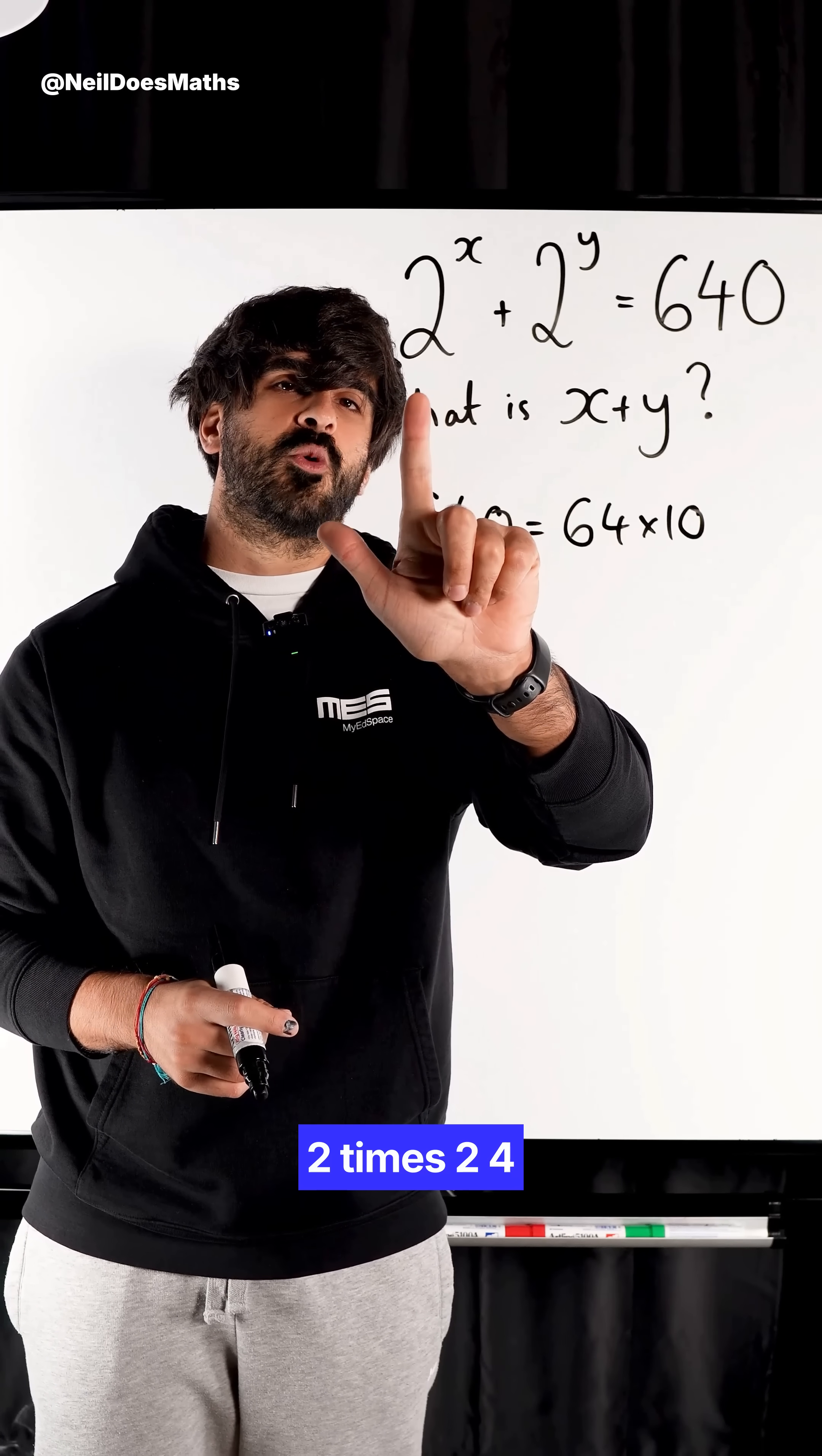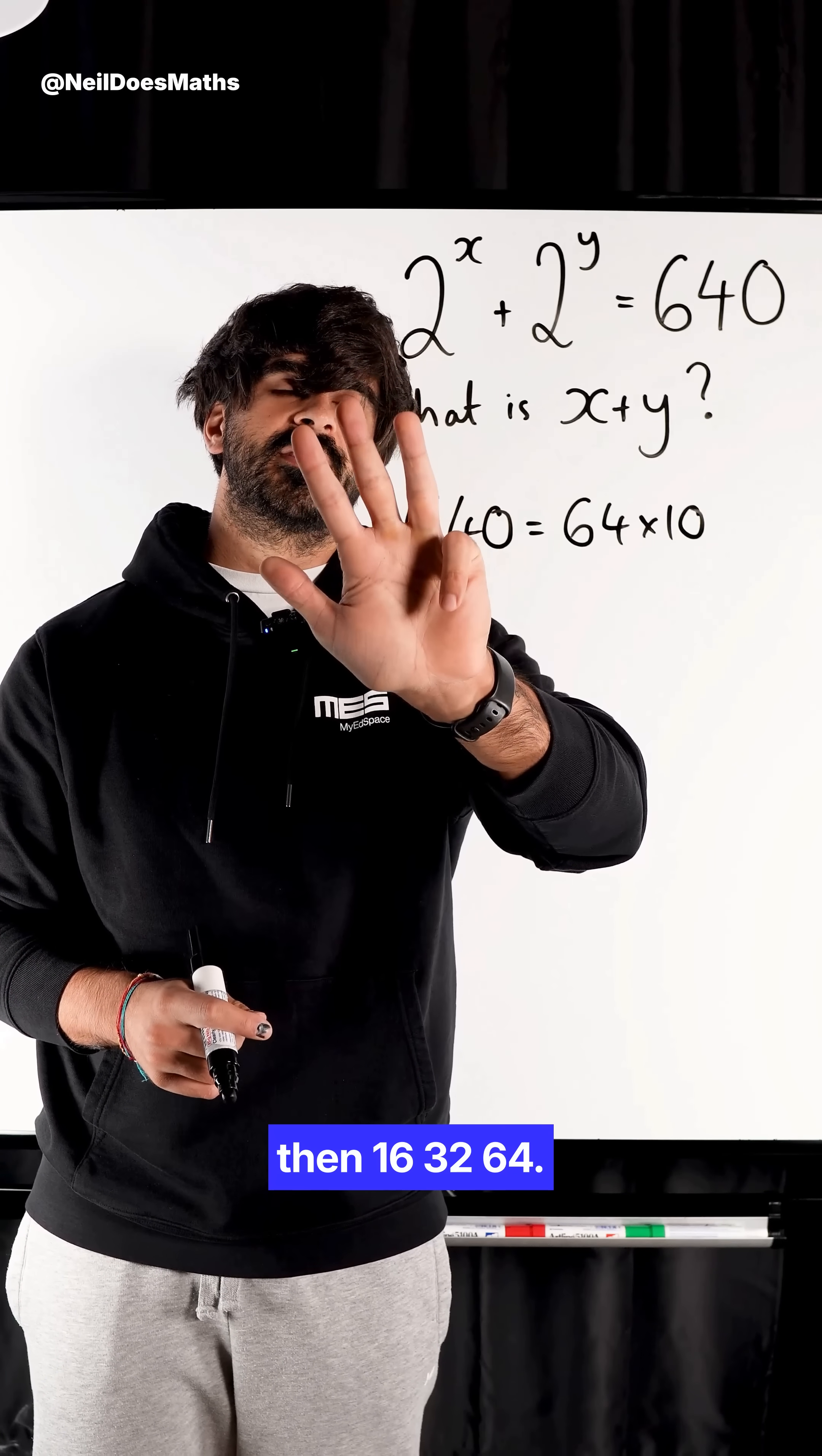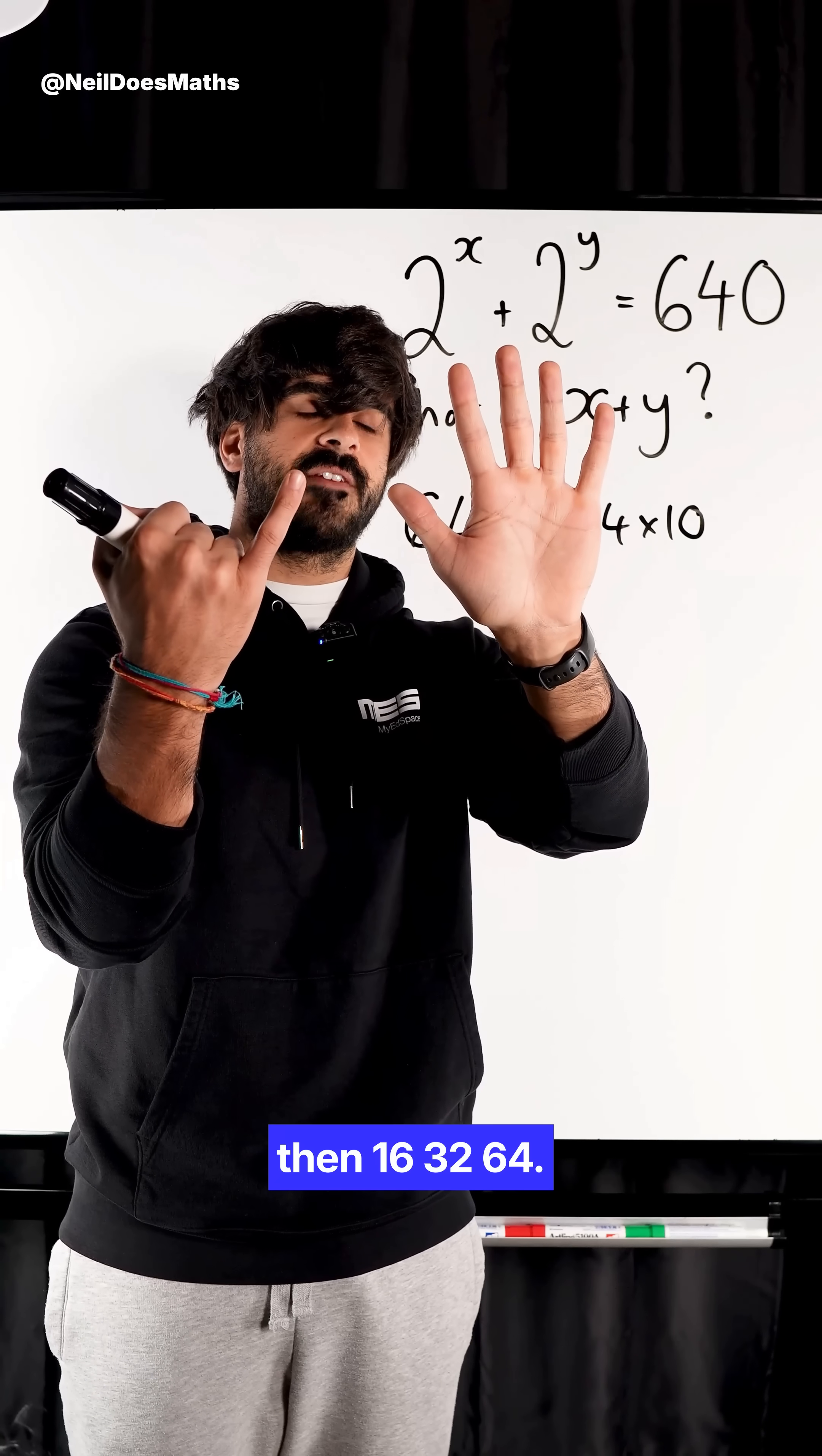2 to the power of 1 is 2, times 2 is 4, times 2 is 8, then 16, 32, 64.